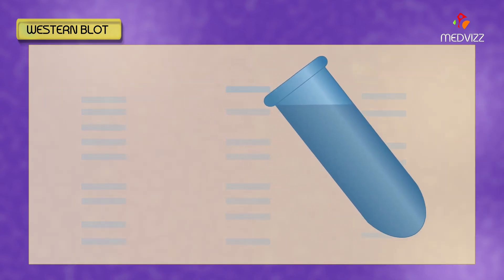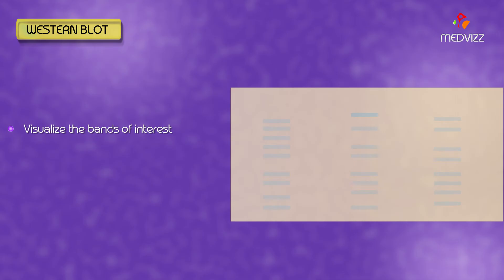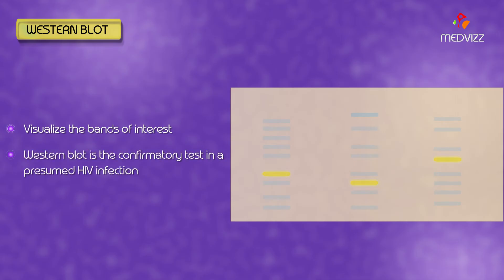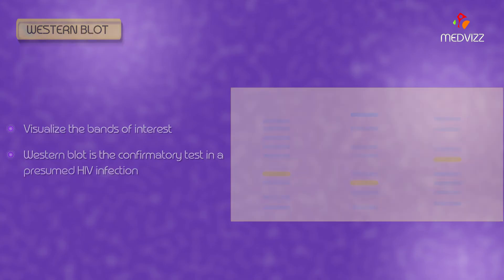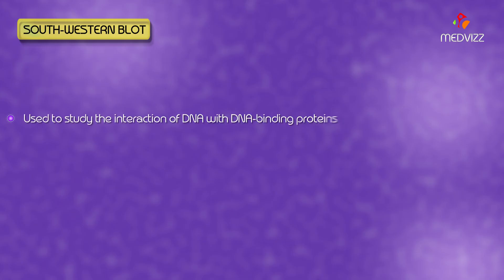Finally, an appropriate substrate is added to visualize the bands of interest. The western blot is the confirmatory test in a presumed HIV infection. Southwestern blot is used to study the interaction of DNA with DNA-binding proteins, such as proteins that regulate transcription.